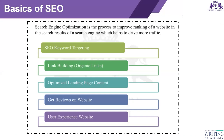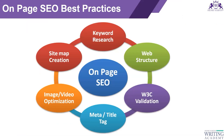First thing is you would target the keywords, work on link building with organic links, optimize landing page content - we have already understood what landing pages are. Then you will take care of getting reviews on your website and see how user-friendly your website is. If you are mentioning too many things on your website and it is not user-friendly, users have to really struggle to navigate - visual consistency matters. SEO is also of two types: on-page SEO and off-page SEO.